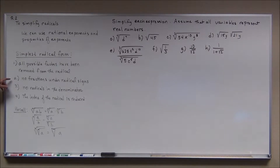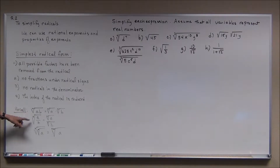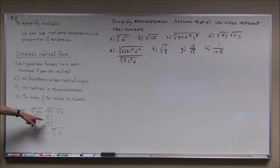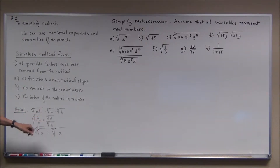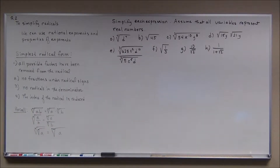No fractions under the radical signs, no radicals in the denominator — because if you have a root of a fraction, it equals the quotient of the roots of the numerator and denominator, giving you a radical in the denominator. And the index of the radical is to be reduced. I'll show you an example of that here before I change screens.